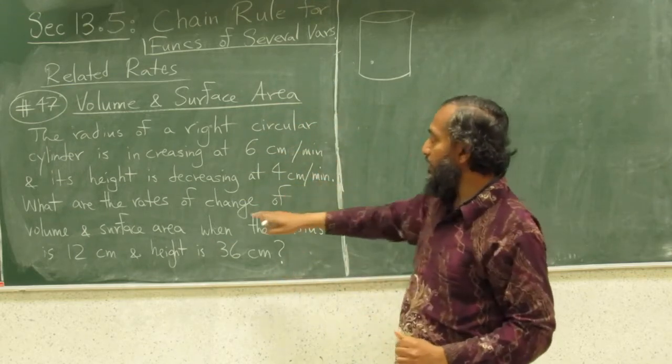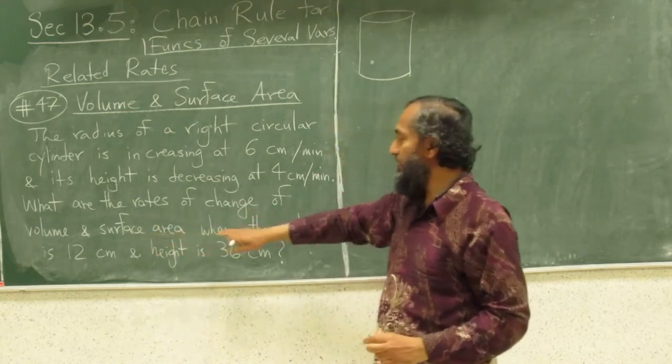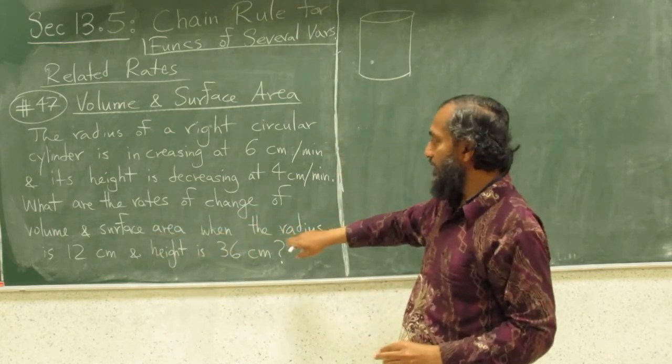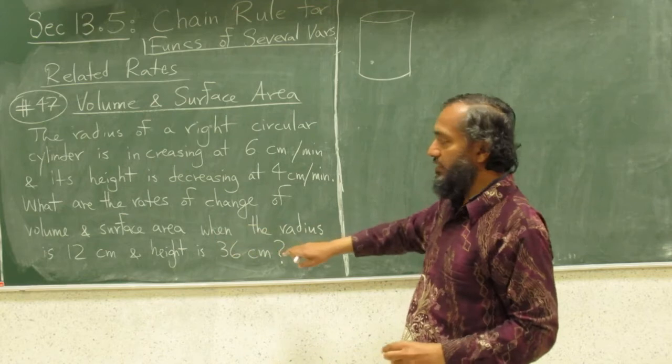What are the rates of change of the volume and surface area when the radius is 12 centimeters and height is 36?